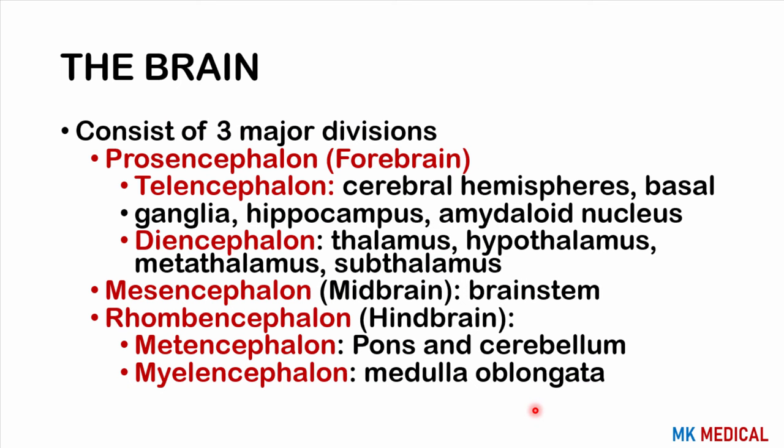The brain embryologically consists of three major divisions: the forebrain (prosencephalon), the midbrain (mesencephalon), and the hindbrain (rhombencephalon). The forebrain is divided into the telencephalon — consisting of the cerebral hemispheres, basal ganglia, hippocampus, and amygdaloid nucleus — and the diencephalon, consisting of the thalamus, hypothalamus, metathalamus, and subthalamus. The mesencephalon is the midbrain, and the rhombencephalon is divided into the metencephalon (pons and cerebellum) and the myelencephalon (medulla oblongata).